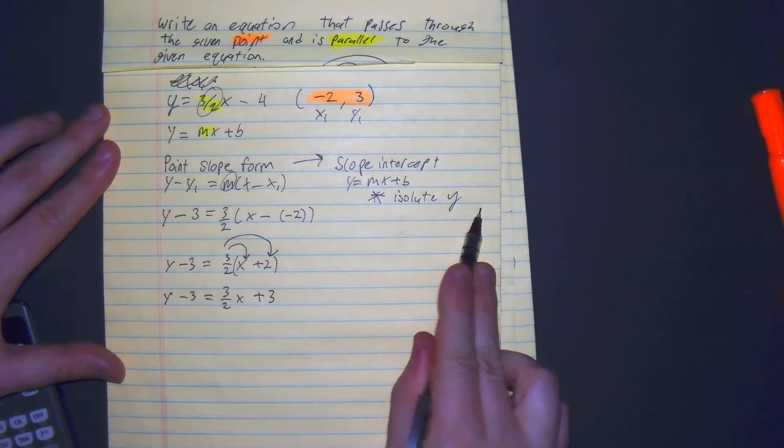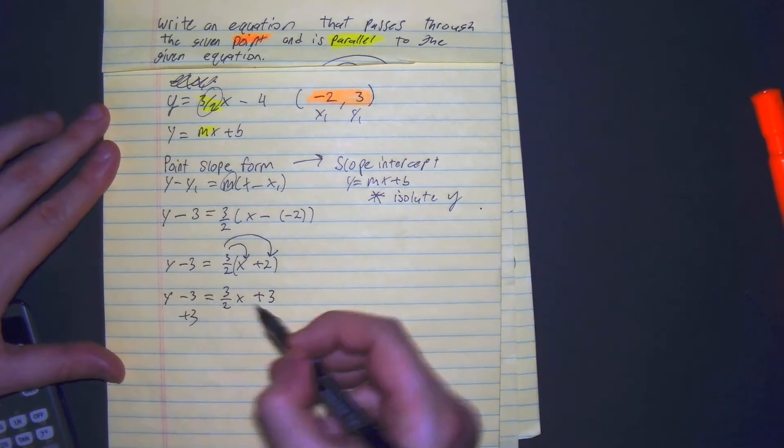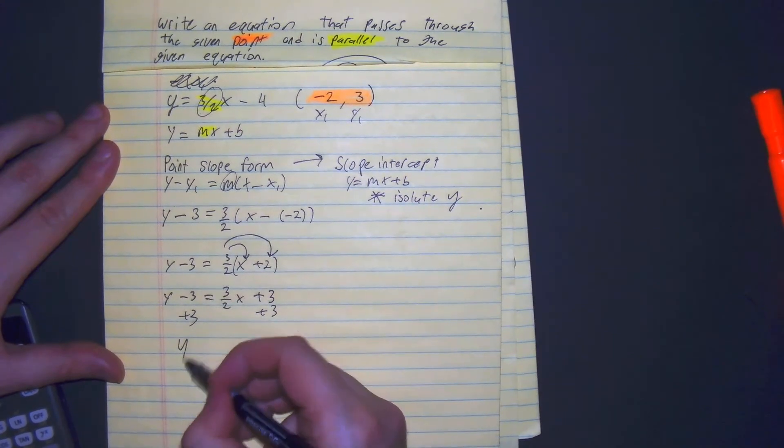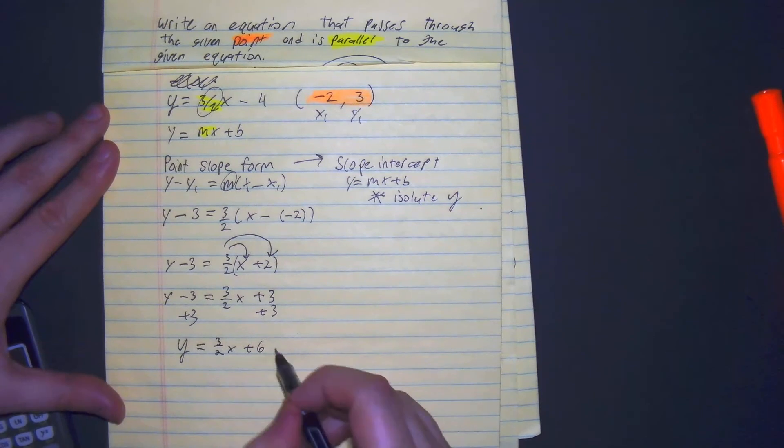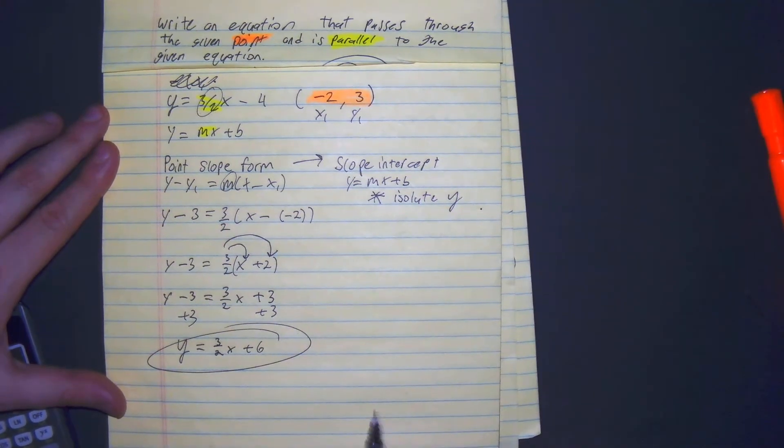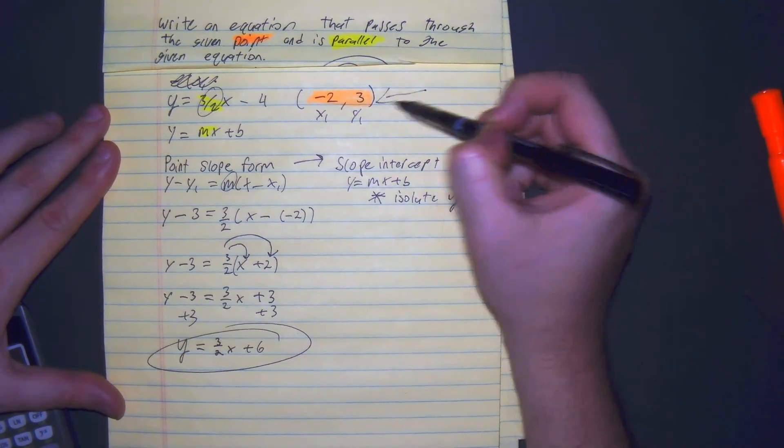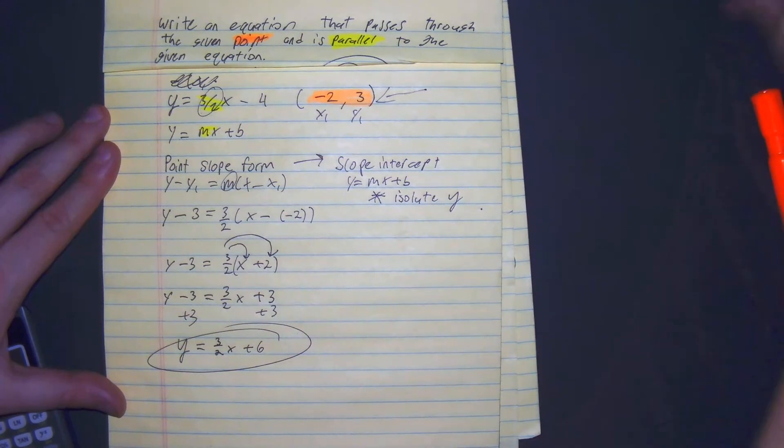To finish it, we should isolate y. Add 3, add 3, and we get y equals 3 over 2 x plus 6. We are able to write an equation that passes through this point and has the same slope. There you have it.